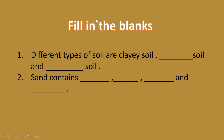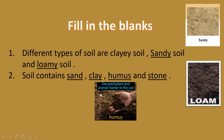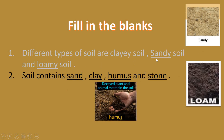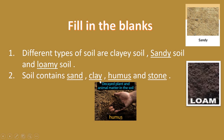Now we will be filling in the blanks. First: different types of soil are clay soil, sandy soil, and loamy soil. Second: soil contains sand, clay, humus, and stone.